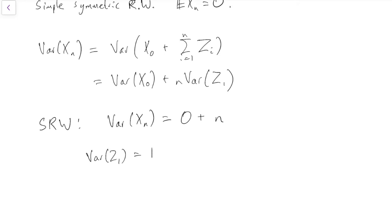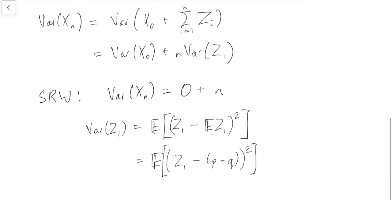Well, you'll remember, of course, the variance is defined as the expectation of Z1 minus the expected value of Z1 squared. And we worked out the expected value of Z1 earlier. It was p minus q, wasn't it? So this is Z1 minus (p minus q) squared. Okay, so with probability p, Z1 is 1. So that's p(1 minus (p minus q)) squared. And that's q lots of minus 1, because with probability q, Z1 is minus 1.